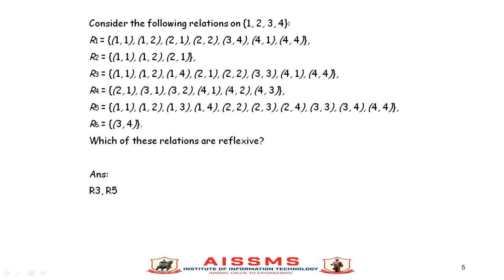Similarly for R5, the ordered pairs (1,1), (2,2), (3,3), and (4,4) are present. For R1, the ordered pairs (1,1), (2,2), and (4,4) are present. In this way you can verify the other relations for the reflexive property.